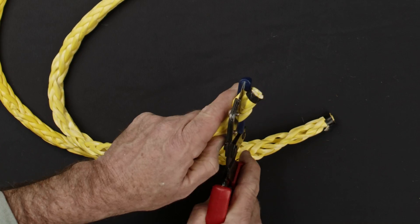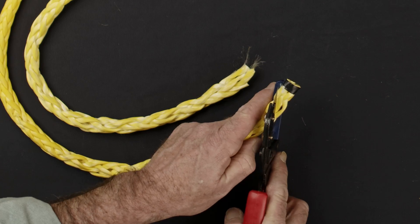Using a rope cutter or a sharp knife, cut the tapered ends of your rope at 45 degrees and tape them tightly.